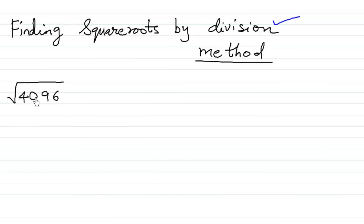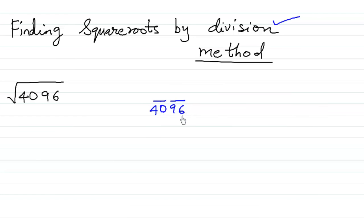First of all we shall write 4096, and then starting from the units place we are going to group them in groups of two. So 9 and 6 becomes the first group and 4 and 0 becomes the second group. Starting from the units place, make groups of two, and then we are going to find the square root.